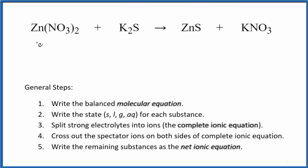In this video, we'll write the balanced net ionic equation for Zn(NO3)2 plus K2S. This is zinc nitrate, this is potassium sulfide. The first thing we need to do with net ionic equations, we have to balance the molecular equation.